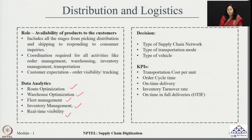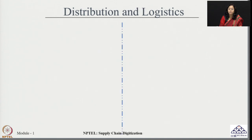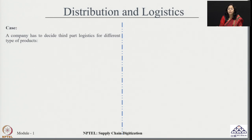Some of the prominent KPIs which industries track continuously in distribution and logistics include transportation cost per unit, order cycle time, on-time delivery, inventory turnover rate, and on-time in-full deliveries — also called OTIF. We will talk about the application of these KPIs through a case study.